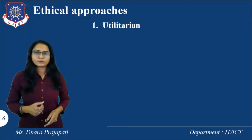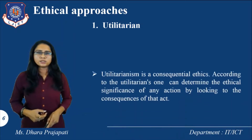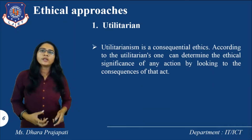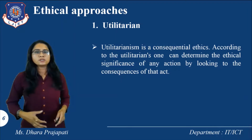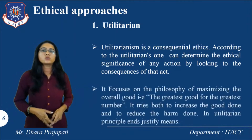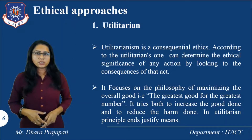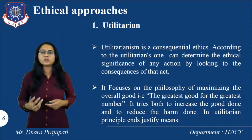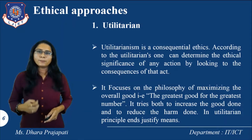There are several ethical approaches available in ethical decision making. The first approach is utilitarian. Utilitarianism is a consequential ethics — one can determine the ethical significance of any action by looking at the consequences of that act. It focuses on the philosophy of maximizing overall goals — the greatest good for the greatest number. It tries to both increase the good done and reduce the harm done. Utilitarian principles justify the means.